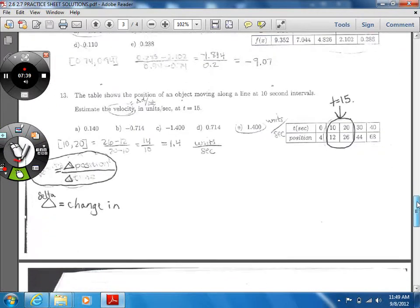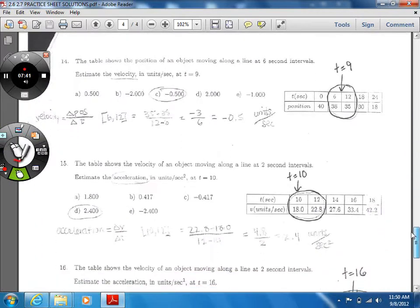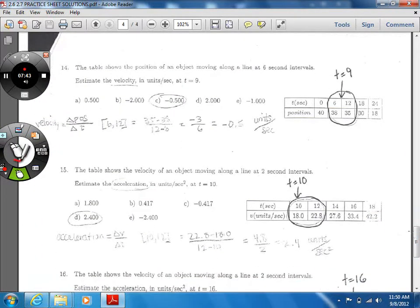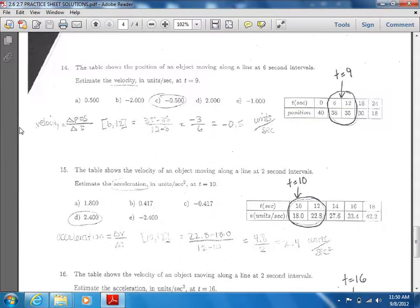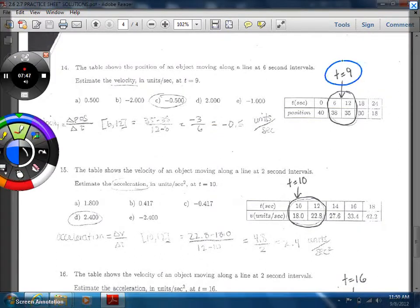Number 14 is the same thing. We want to estimate the velocity at nine seconds. And so that happens to be right in between six and 12. It doesn't have to be right in between because anywhere in there is going to be an estimate of that same amount. So we're going to do 35 minus 38 over 12 minus six. And so we end up with negative 0.5 units per second.